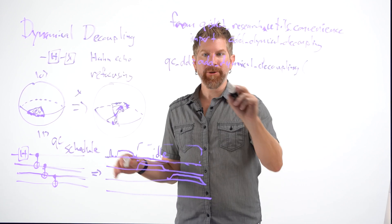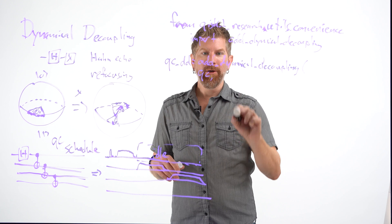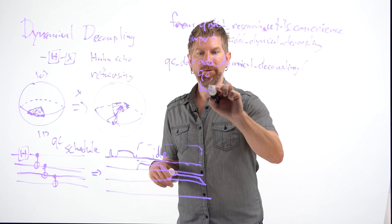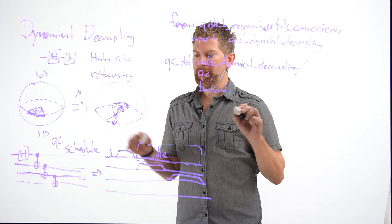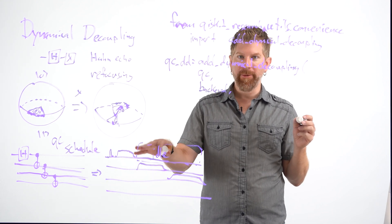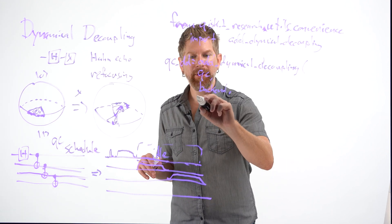And it requires some arguments. You're going to need the quantum circuit. You're going to need the backend. Because for each backend, there's going to be different timing and pulse level information. And you're going to need